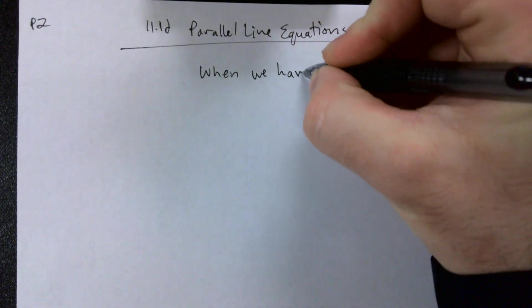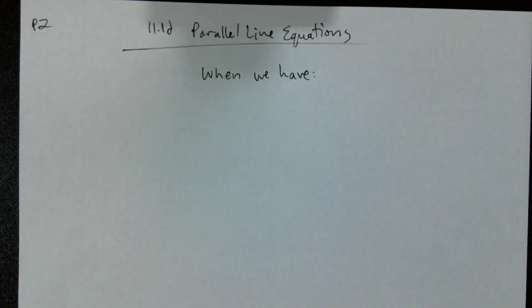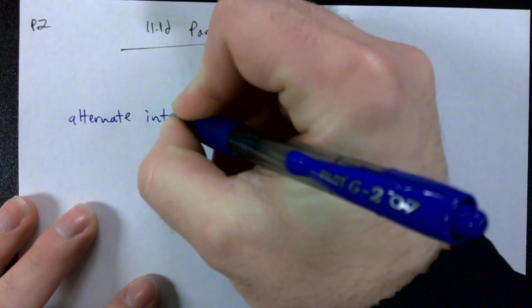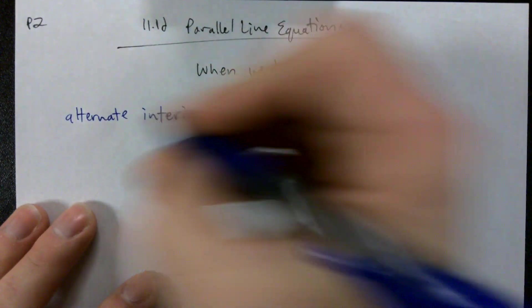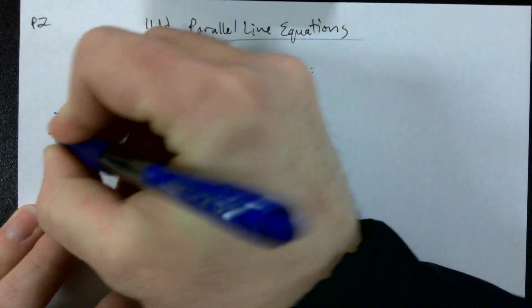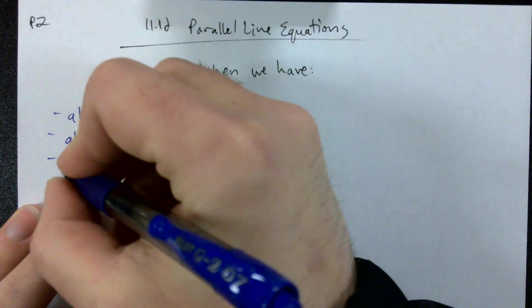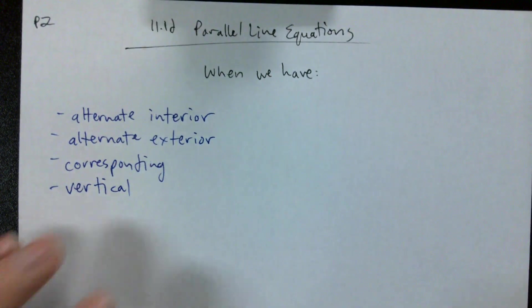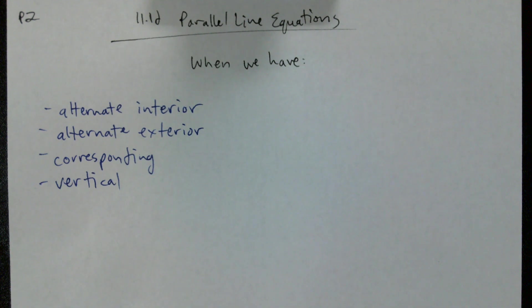There's only two things that we need to do. When we have alternate interior, alternate exterior, corresponding, or vertical angles - if we have any one of those four angle relationships, all we need to do is set both expressions equal to each other and solve for x.